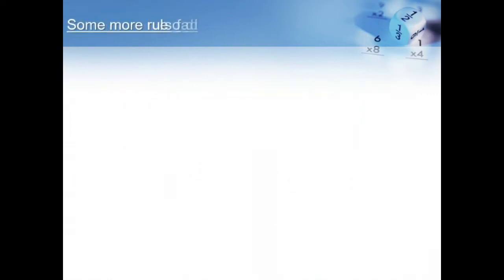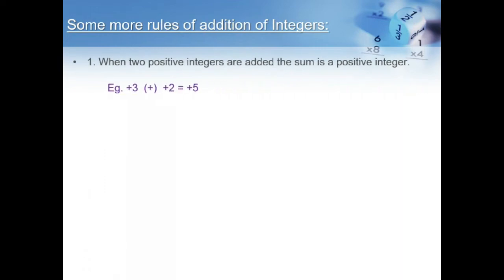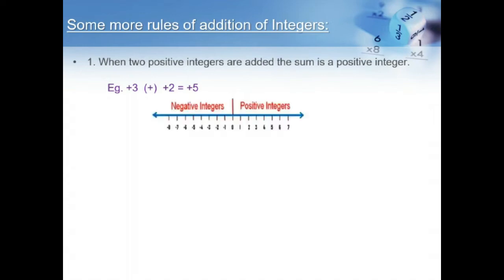Here is the first rule of addition of integers: when two positive integers are added, the sum is a positive integer. Example: plus 3 plus plus 2 is equal to plus 5.